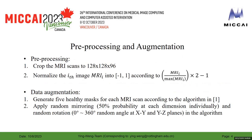There are two steps in our pre-processing. We firstly crop the MRI scan to 128 by 128 by 96. We secondly normalize each MRI image into the range between minus 1 and 1, according to: MRI-I divided by the max value of MRI-I, multiplied by 2, then subtract 1.